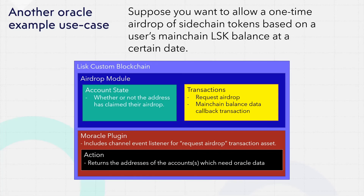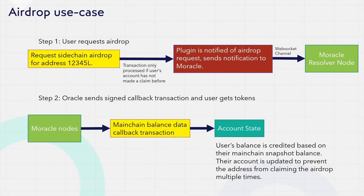It includes the same Moracle plugin as our first example, but listens for a different transaction type. The process of getting the airdrop is straightforward for the user. First, the user sends a transaction requesting the airdrop. The plugin is notified of this and it sends a notification to the resolver. In the second step, the network reaches consensus and sends a callback transaction, allowing the blockchain application logic to update the user's balance appropriately based on their mainchain Lisk balance.